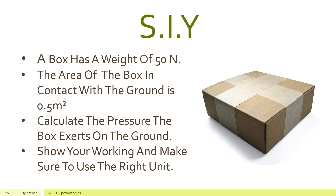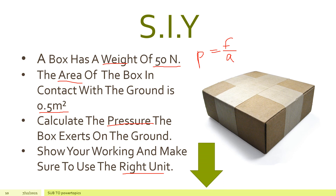For the next question, try to solve this yourself. A box has a weight of 50 Newton. The area of the box in contact with the ground is 0.5 meter squared. Calculate the pressure the box exerts on the ground. Show your working and make sure to use the right unit. Pressure is equal to force over area. You can comment your answers below.